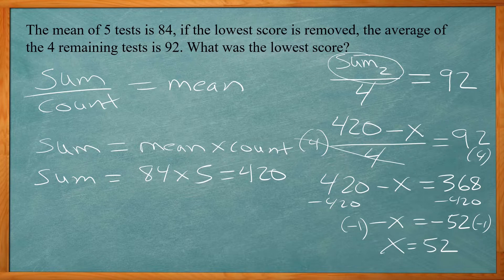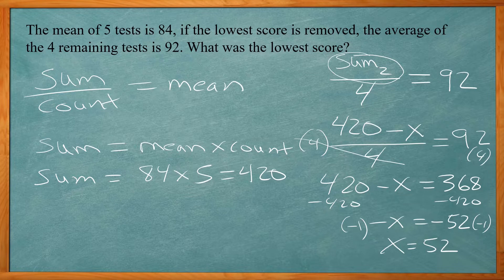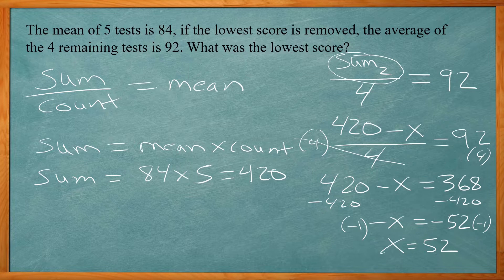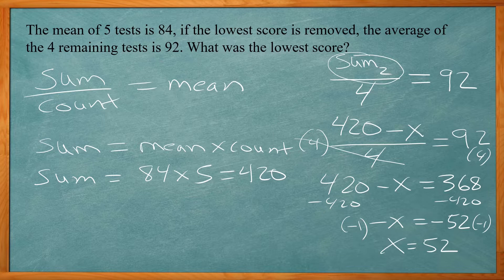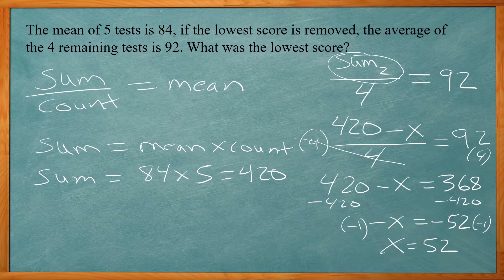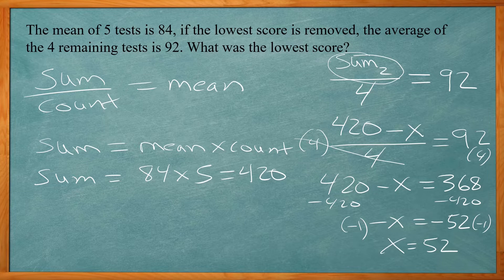So again, we had to apply some reasoning to this. So we have our normal equation, sum over count equals mean. And I know the total of those five test scores. The sum of those five test scores would be mean times the count. I'm going to remove one of them. That's our unknown value. So we have 420 minus x. And we have four test scores. So we divide by four. That sum of the four test scores divided by four will equal the mean of 92. And we just solve for x there.